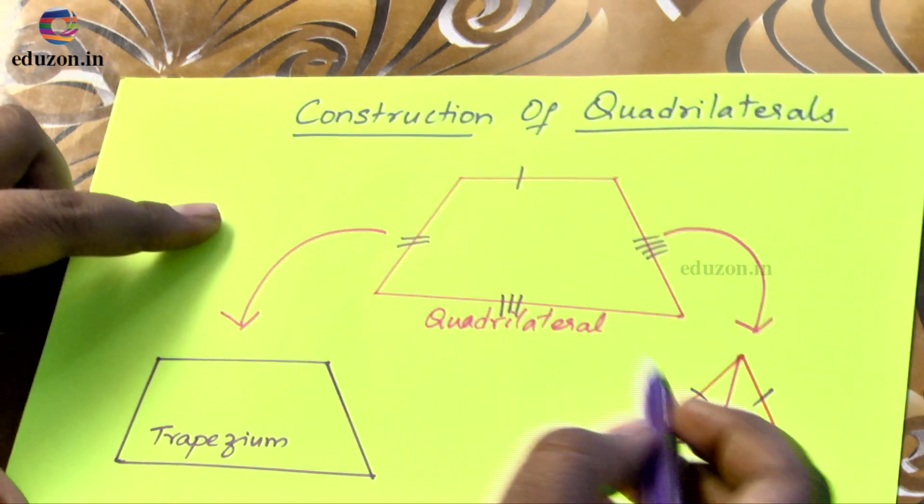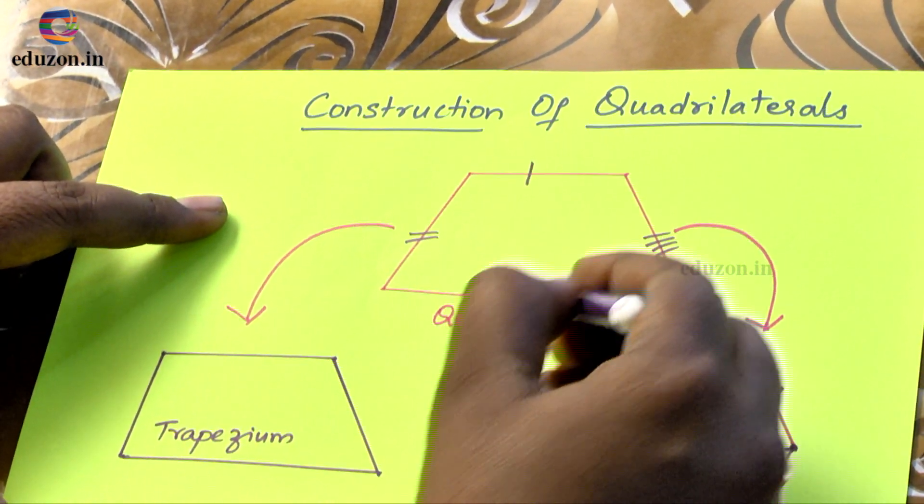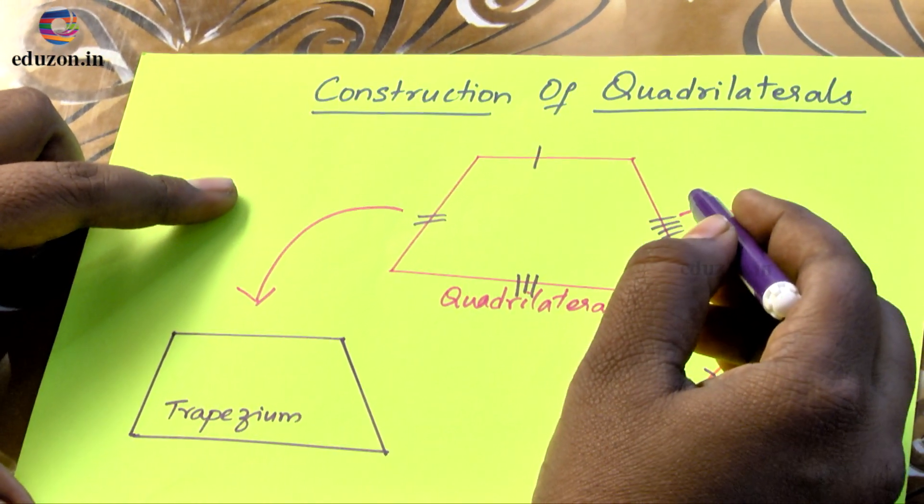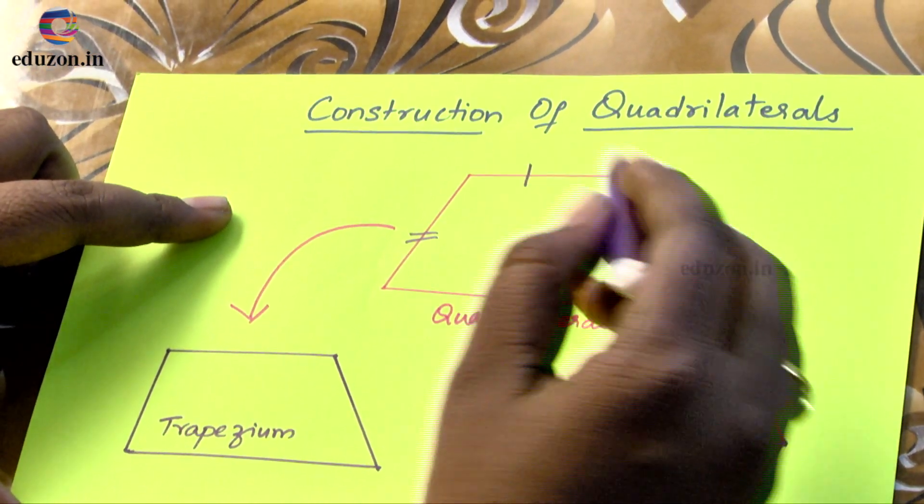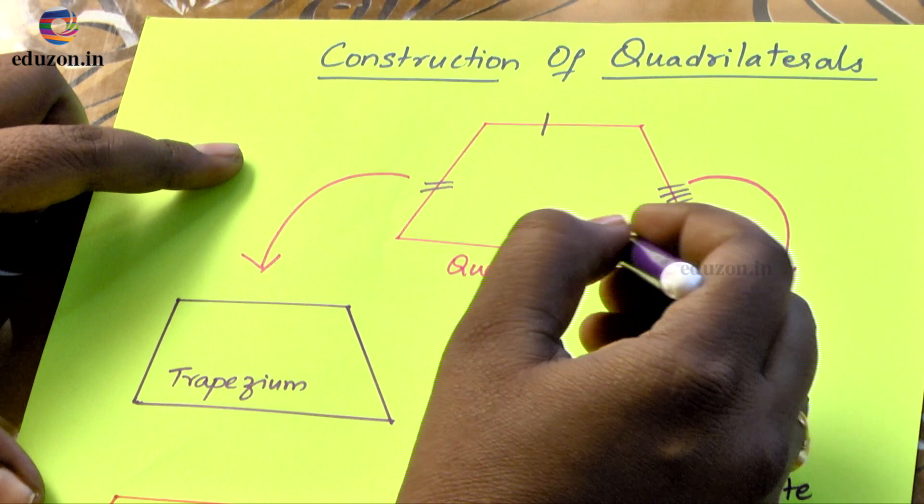For example, you can see that if all the four sides are of different lengths, that is if they don't have the same length, it is just called as a quadrilateral.